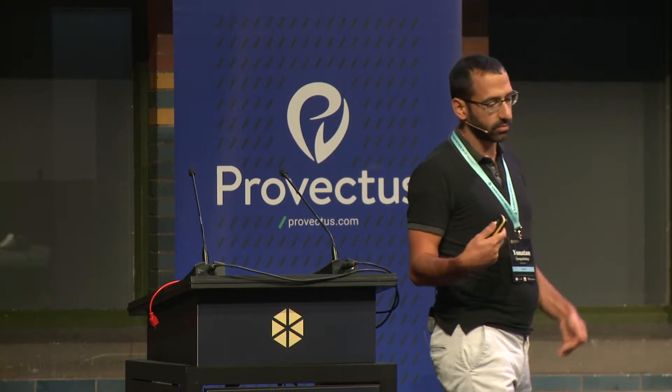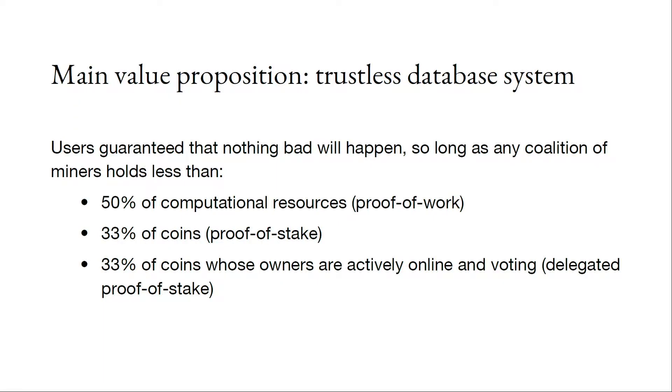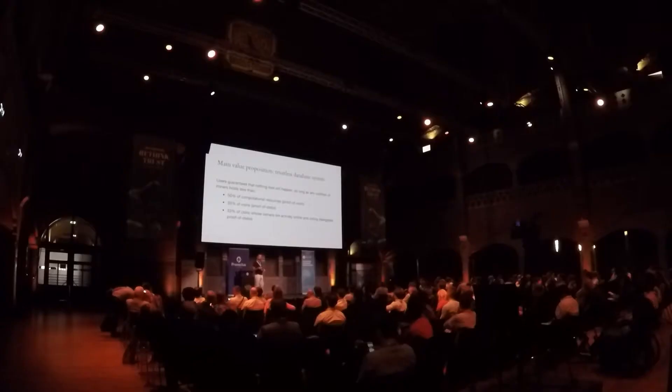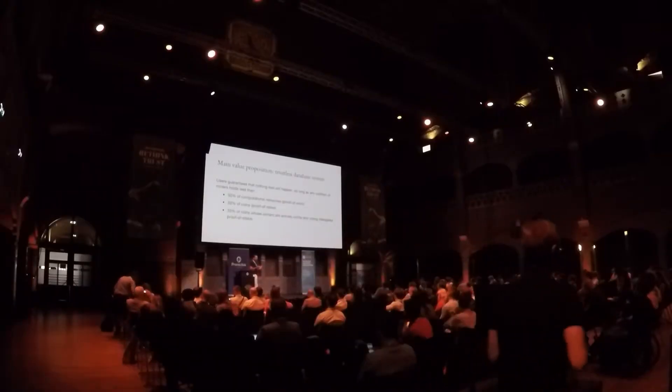As computer scientists, we prefer to define what trustless means. A loose definition: a system is trustless if, in order to disrupt its operation, an attacker needs to control a large portion of the resources. In proof of work, this is computational resources. In proof of stake, it's a large portion of the stake. In delegated proof of stake, it's more refined and subtle. This is the trustless agenda.